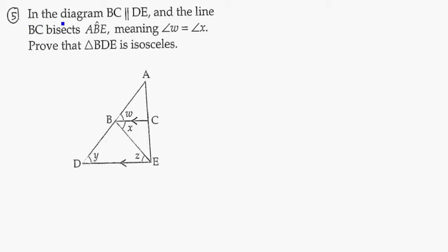So let's look at what the information has given to us. In the diagram, BC is parallel to DE. That's what the two lines there mean, that means it's parallel.